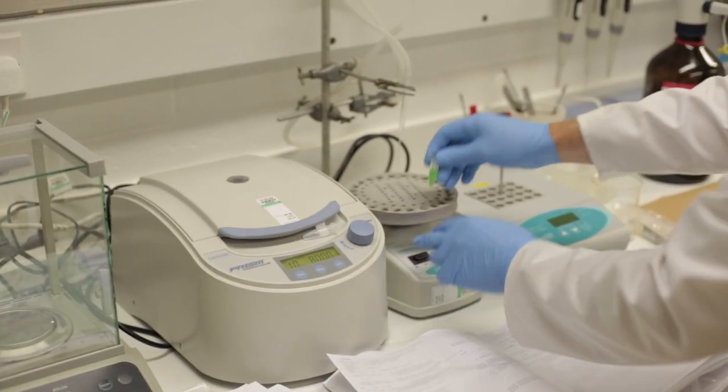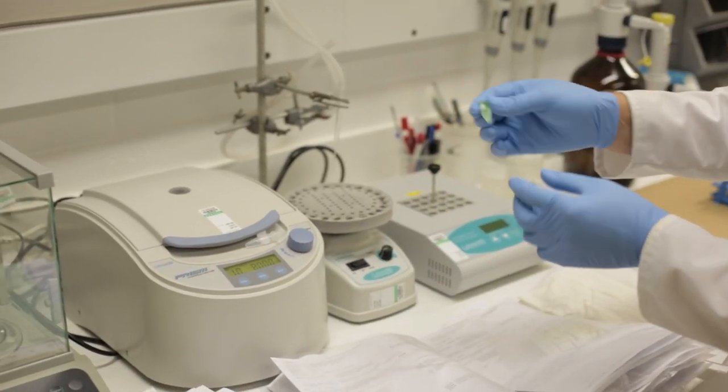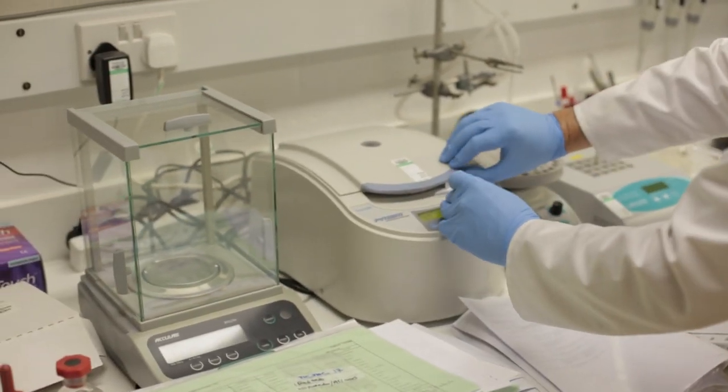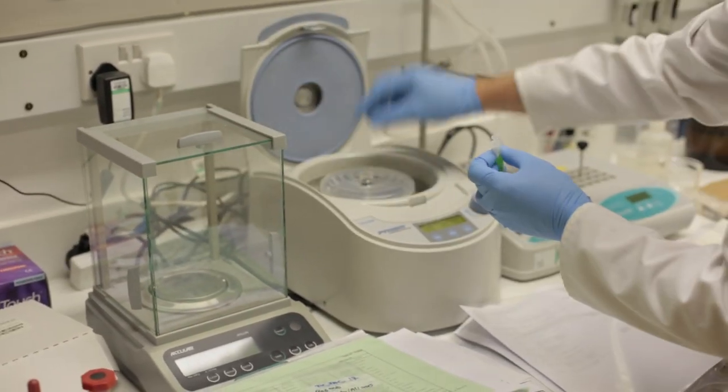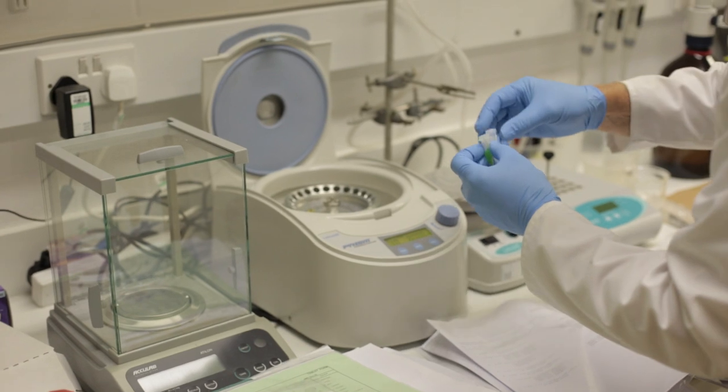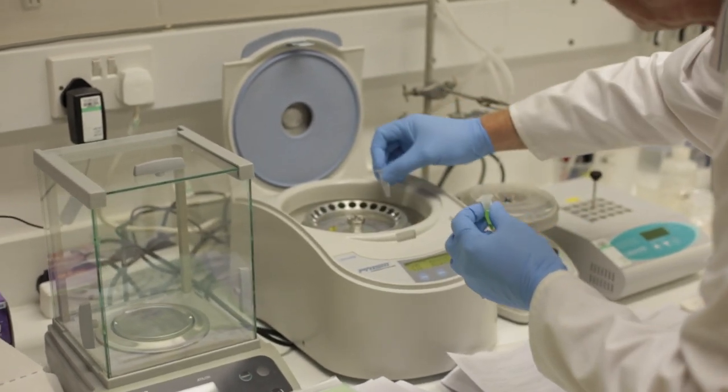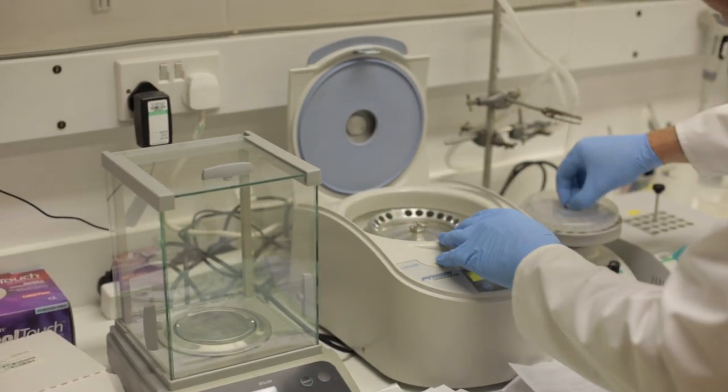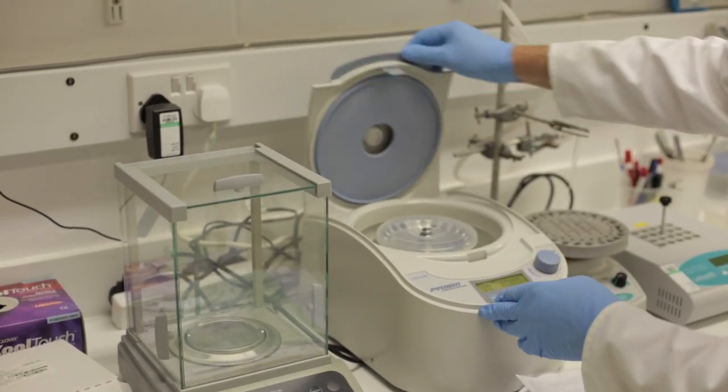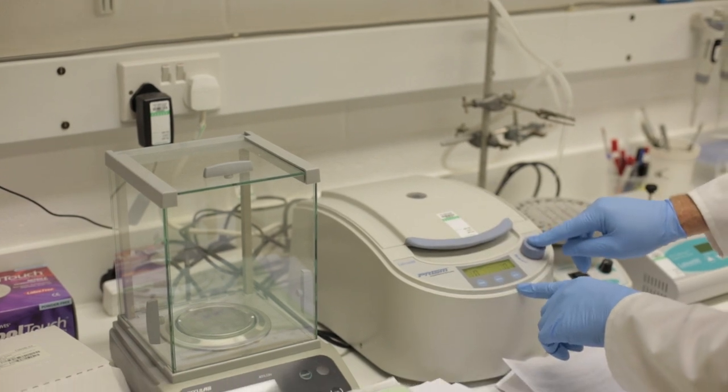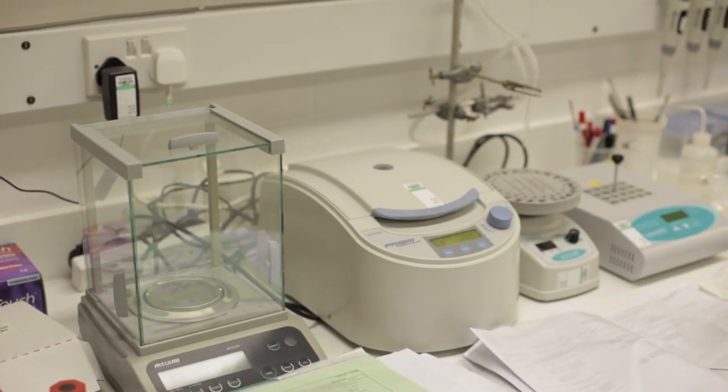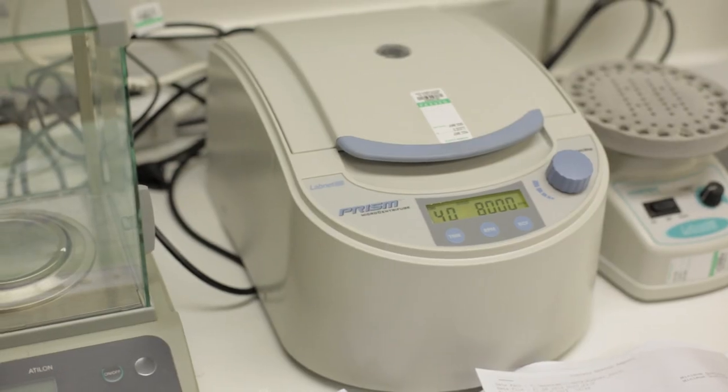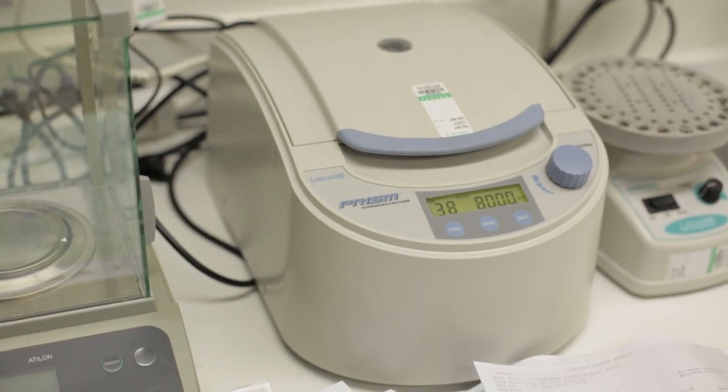So that's now disintegrated the tablet and extracted the drug into the methanol. Now we're going to put it in a centrifuge which will separate the methanol from the residual powder. So it goes in the centrifuge with a counterbalance, close the lid and it will spin for about a minute. So it's spinning at 8000 revs for a minute.